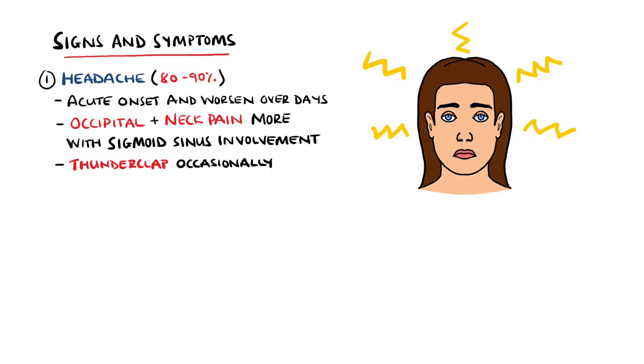Occasionally, the headache can develop as a thunderclap headache, but this finding is typically more suggestive of subarachnoid hemorrhage. Chronic headaches as a presentation are less common. Overall, in 40% of cases,